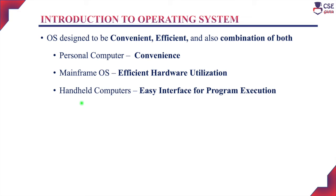Considering hand-held computers, these are limited in size, power, and speed. The operating system must be designed to provide an easy interface for program execution. So the operating system should provide a convenient environment to run applications on one side, and on the other side it should utilize resources efficiently. Other types of computers lie in between these two — convenient and efficient.